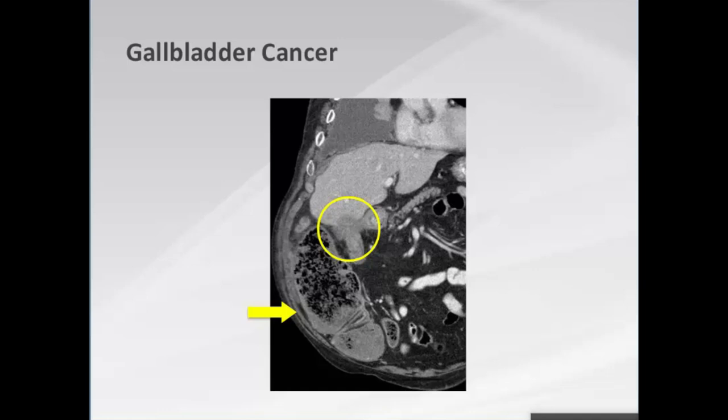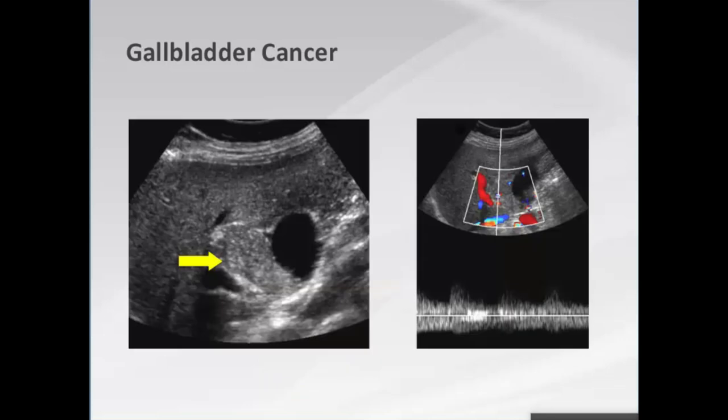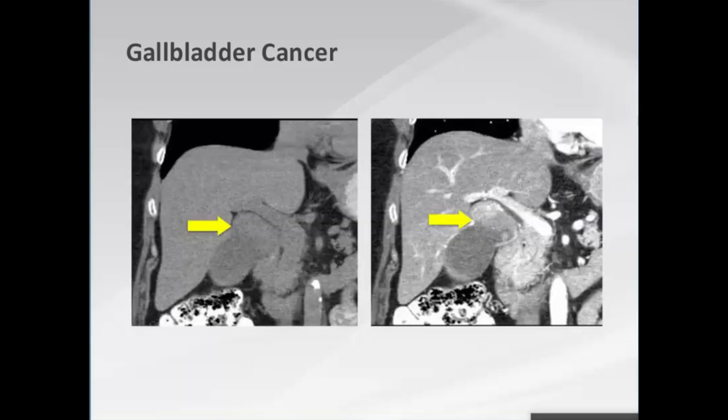Another case: echogenic material within the gallbladder neck that could be sludge, but contrast ultrasound reveals this is a vascular mass. CT for staging confirms a vascular mass — another gallbladder cancer. This patient is doing well four years post-surgery.